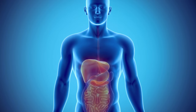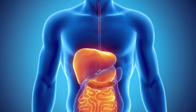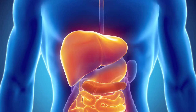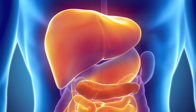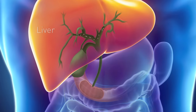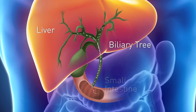A normally functioning digestive system is responsible for breaking down and absorbing nutrients into your bloodstream. Your liver produces bile salts that break down the fats entering your small intestine.